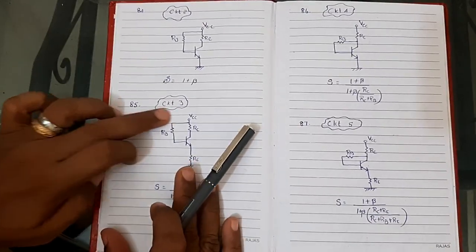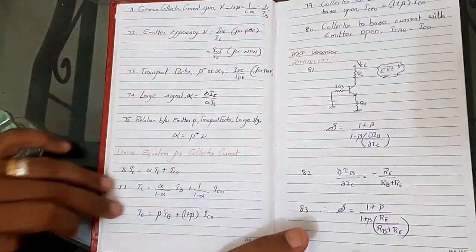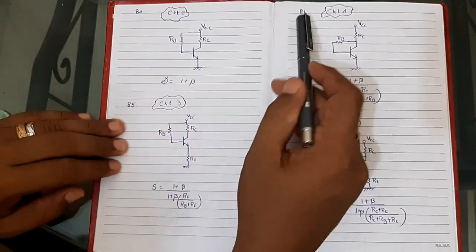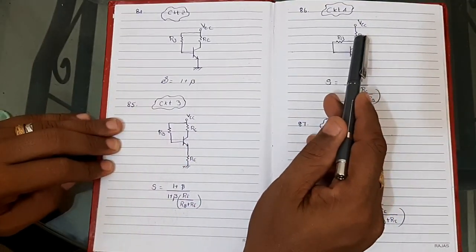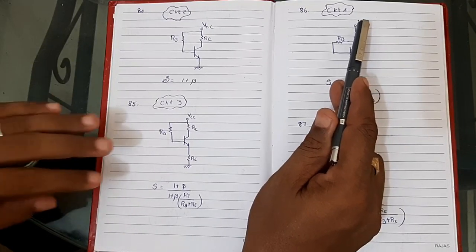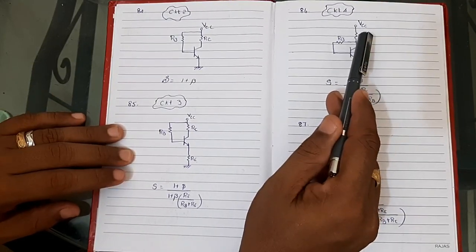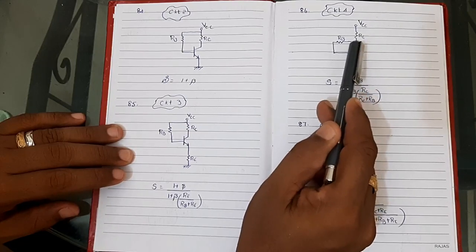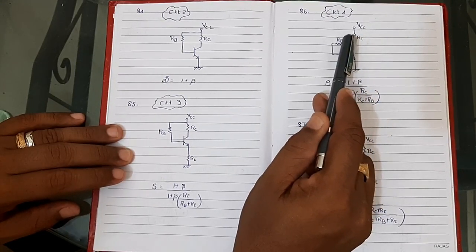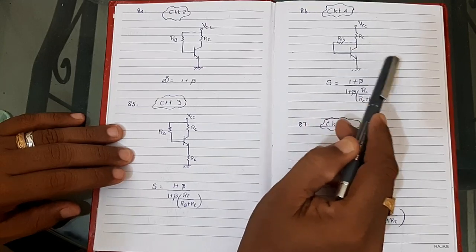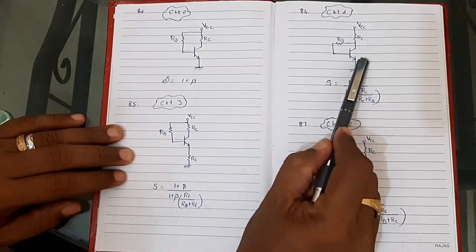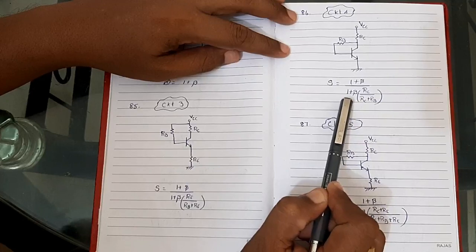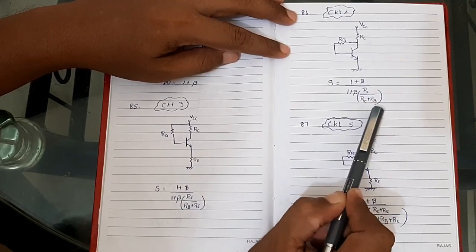For Circuit 4 (a resistor from VCC to a node, then that node connects to both collector via RC and to the base via RB, no emitter resistor): Stability S = (1+β) / [1 + β·RC / (RC + RB)].